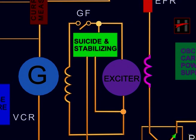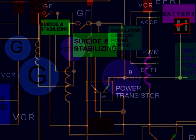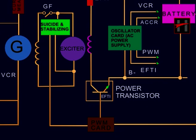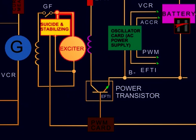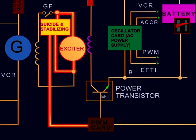This is the suicide and stabilizing circuit. The suicide and stabilizing circuit has twofold functions. First, it limits the exciter output to a value of 1.5 volts when the GF is open through the pulse width modulator winding or the PWM winding. This is its suicide function.